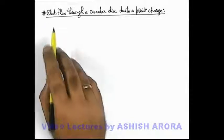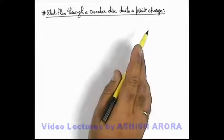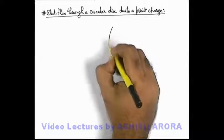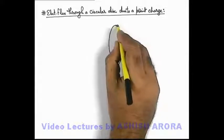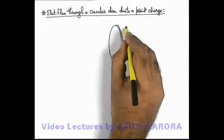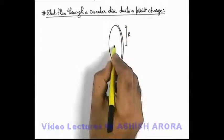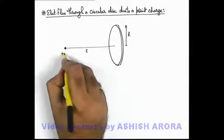Let's study the calculation of electric flux through a circular disc due to a point charge. If we consider a circular disc which is of a small thickness, and say it is of radius r, and on its axis at a distance l, we have placed a point charge plus q.